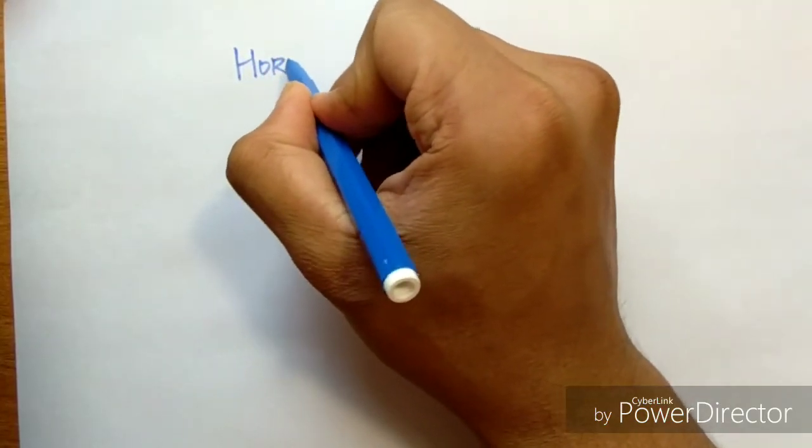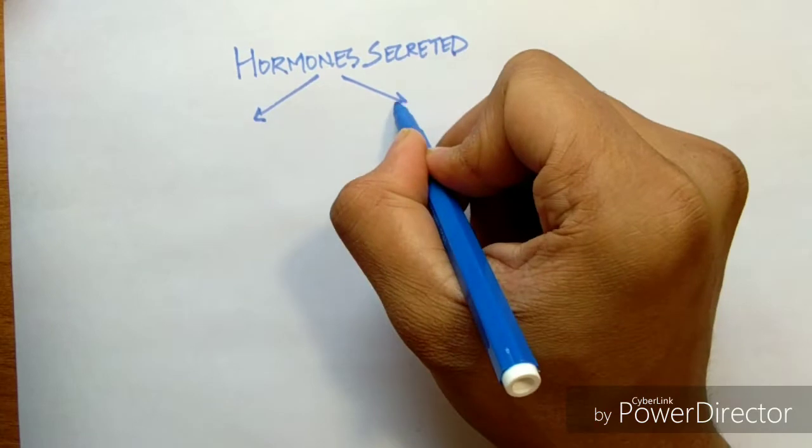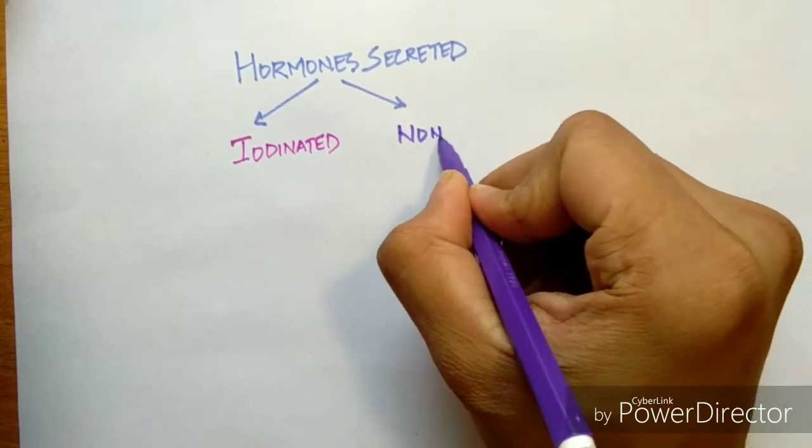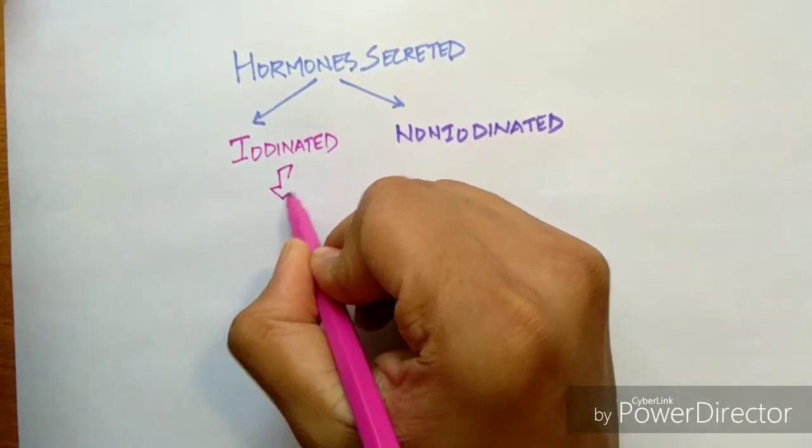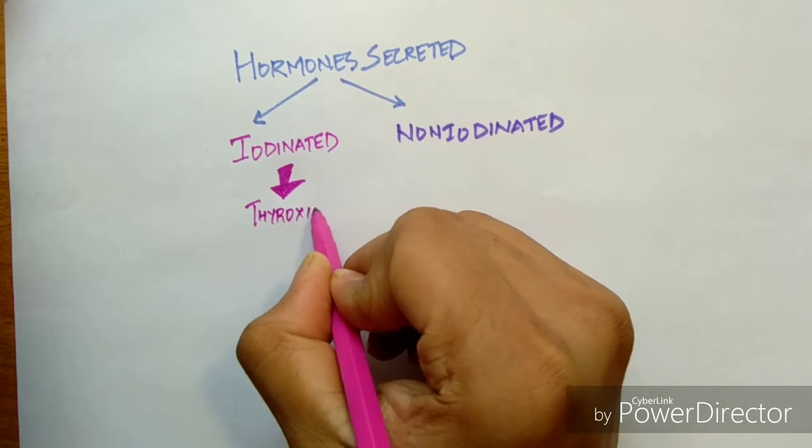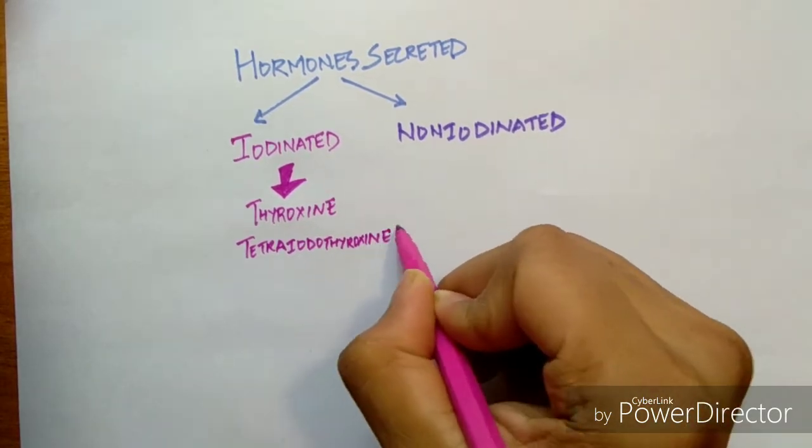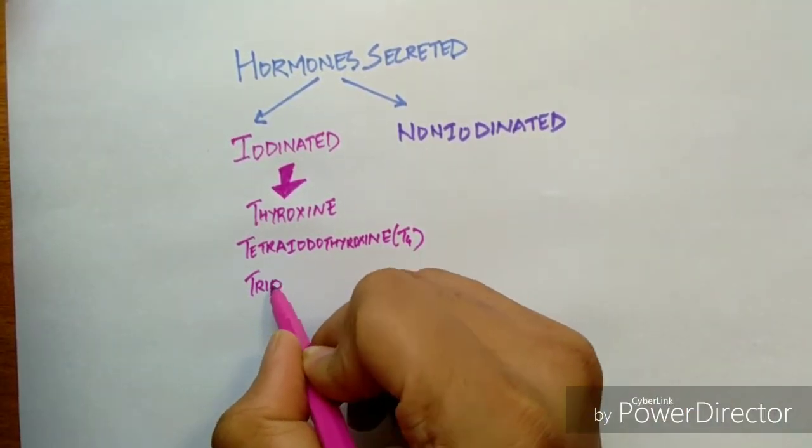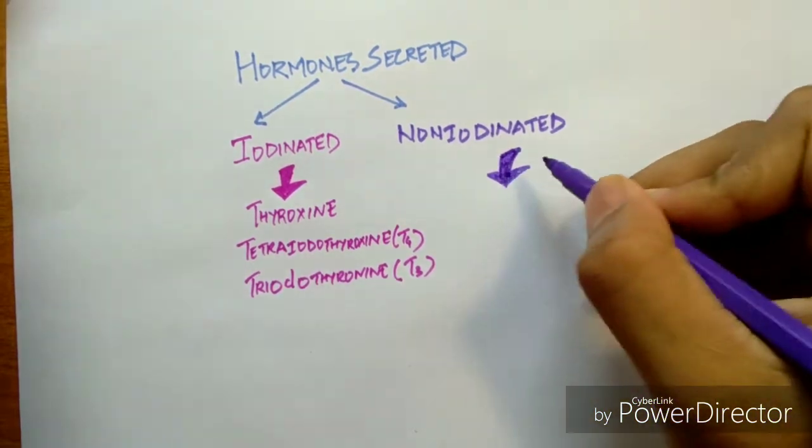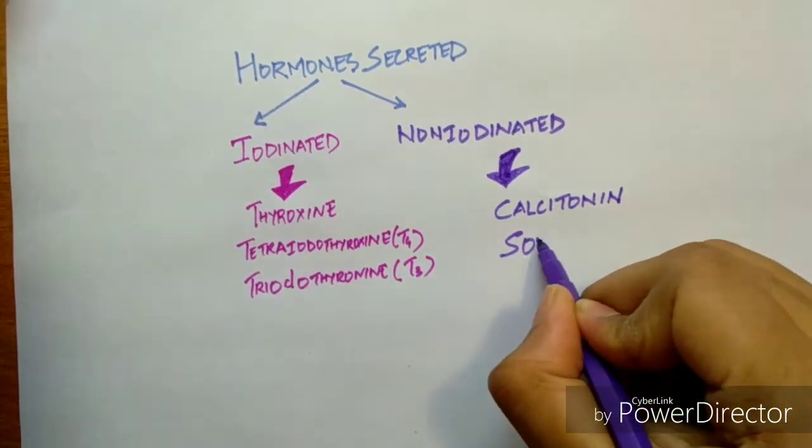Before anything, we need to know the hormones which are secreted by the thyroid gland. They are iodinated and non-iodinated. In iodinated we can see thyroxine, tetraiodothyroxine, and triiodothyroxine, which are T4 and T3 respectively, T3 being the more dominant one. When we talk about non-iodinated, there are basically two: first is calcitonin and second being somatostatin.